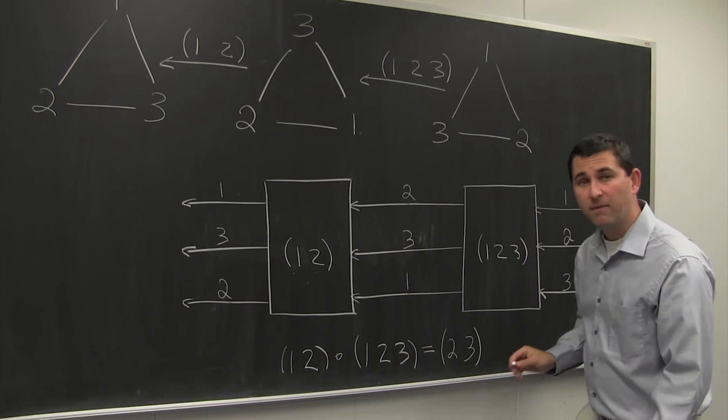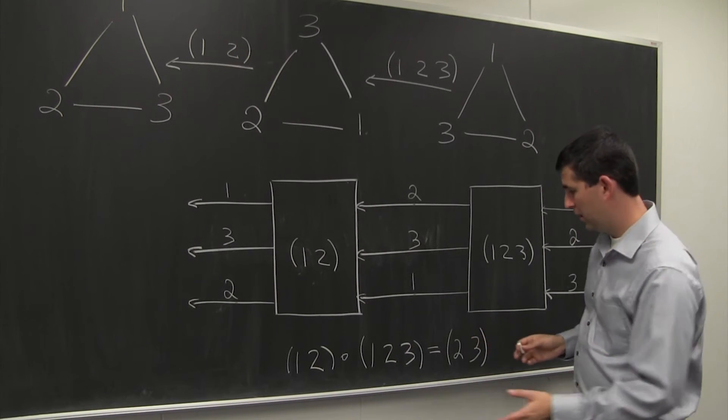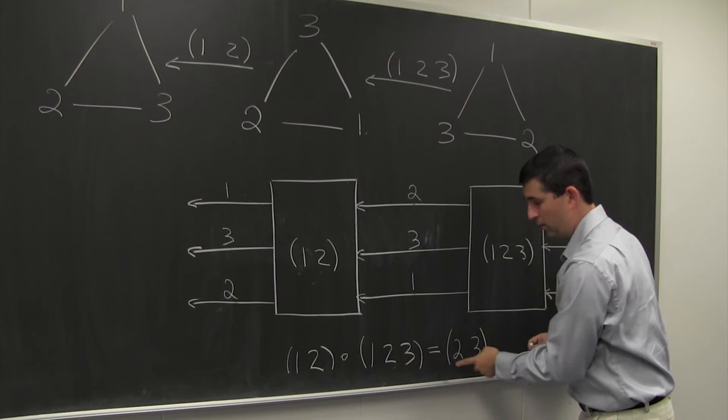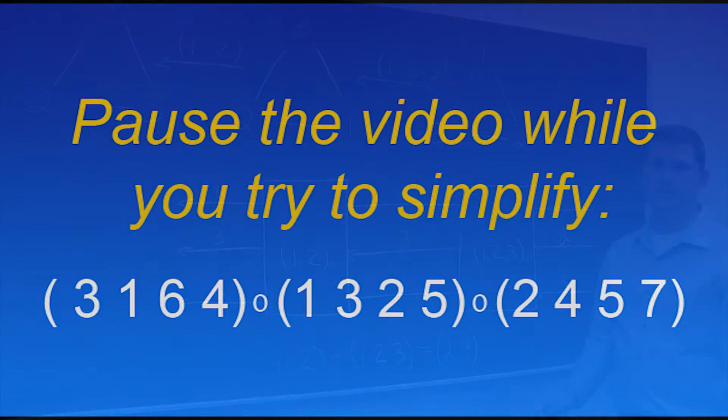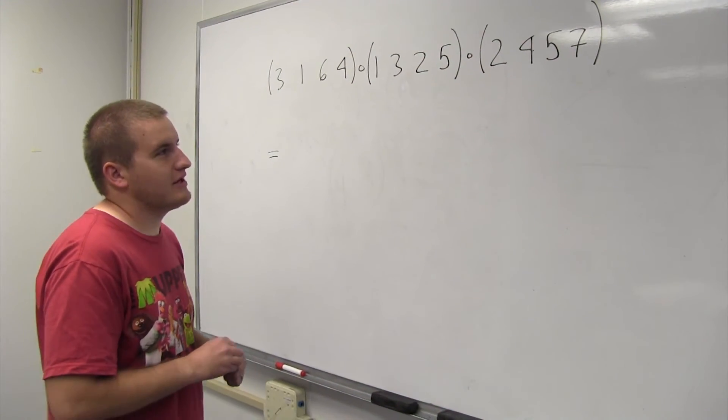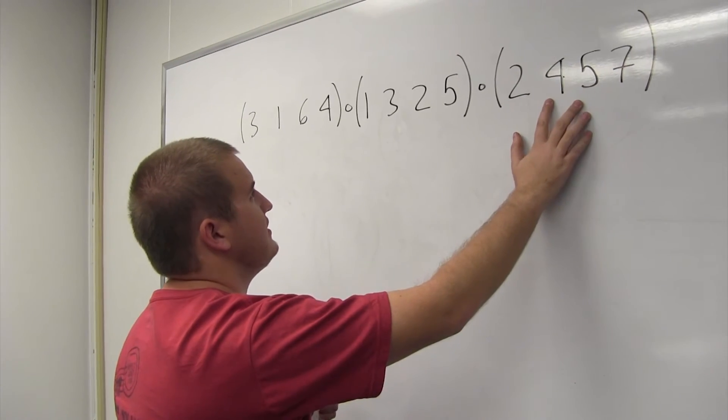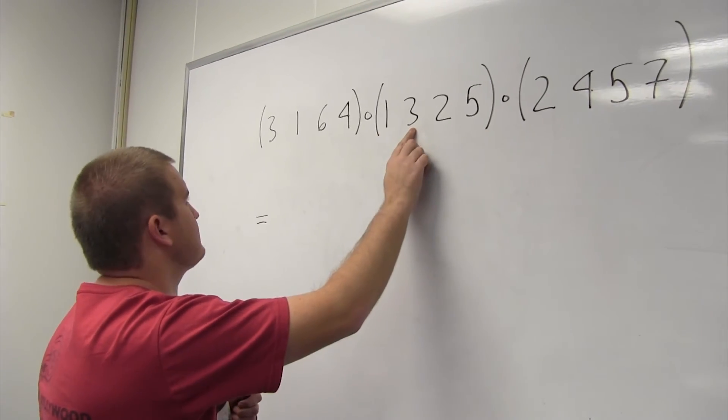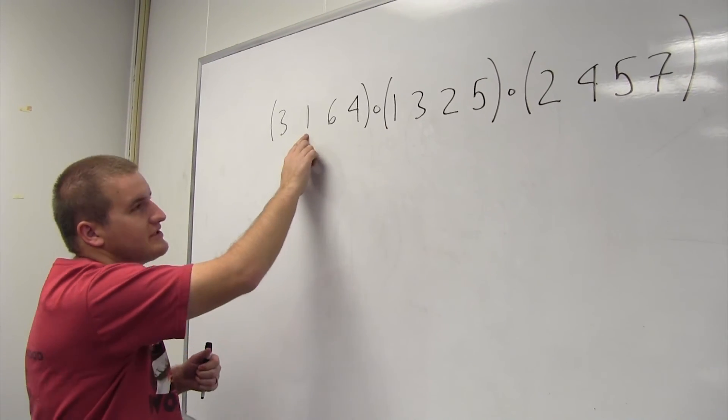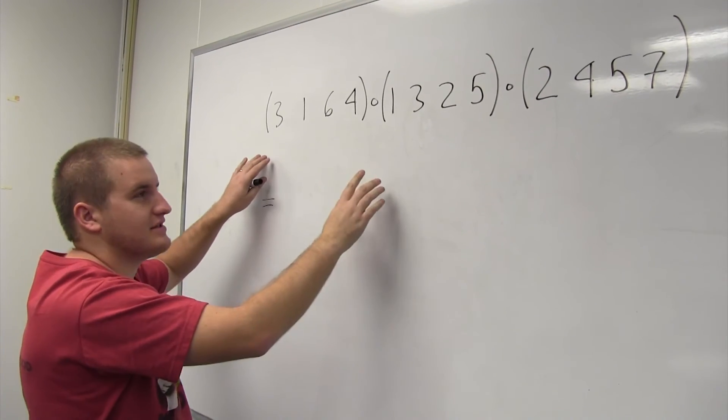And so this is how we can figure out, with any composition of cycles, how the permutation will work. Alright, so in this one, we want to start with the number 1. And 1 is fixed here, but then the 1 goes to 3 here, and the 3 goes back to 1. So overall, the 1 stays in the same place. It's fixed.